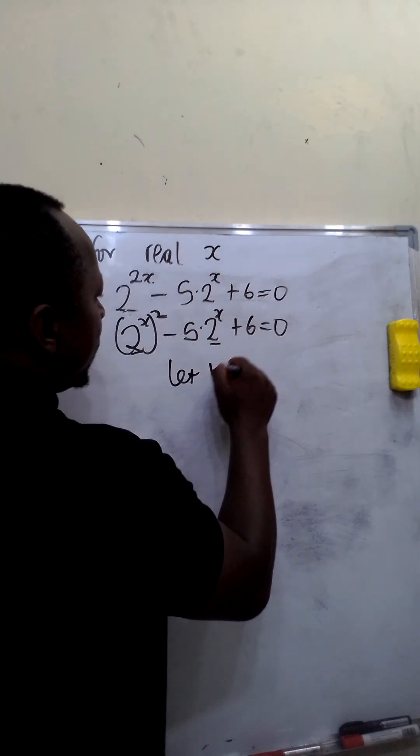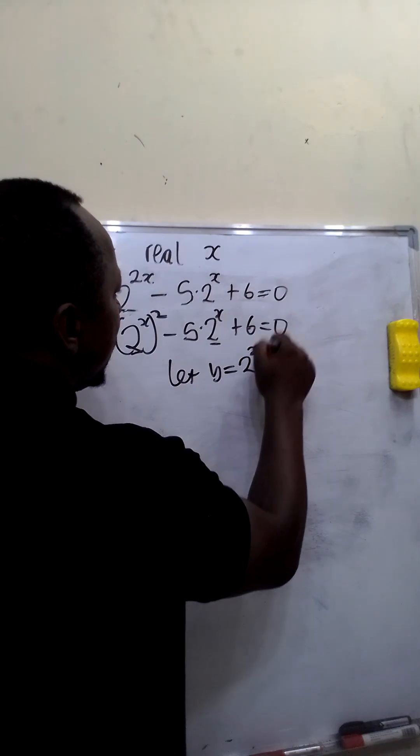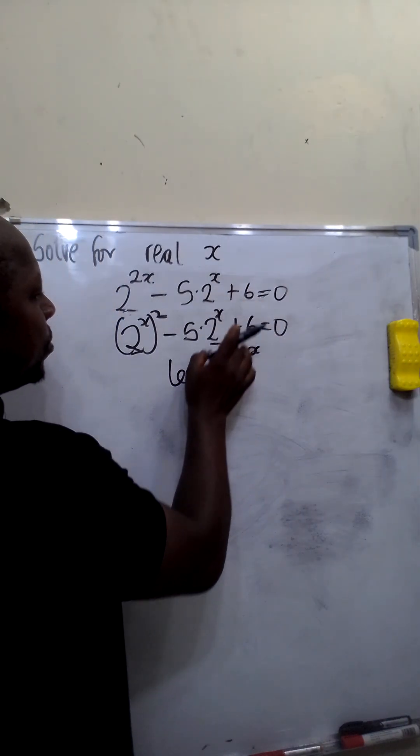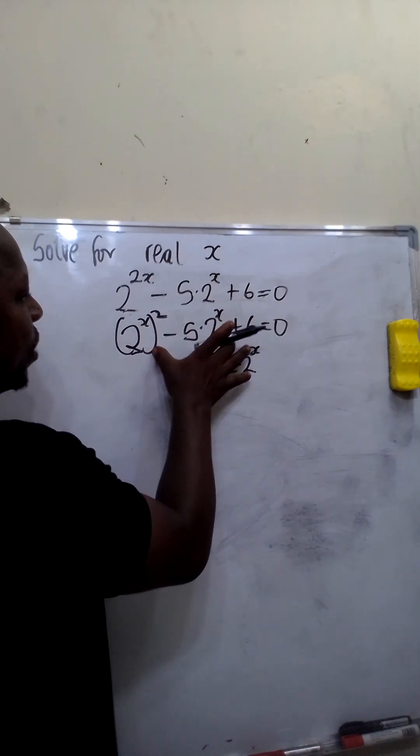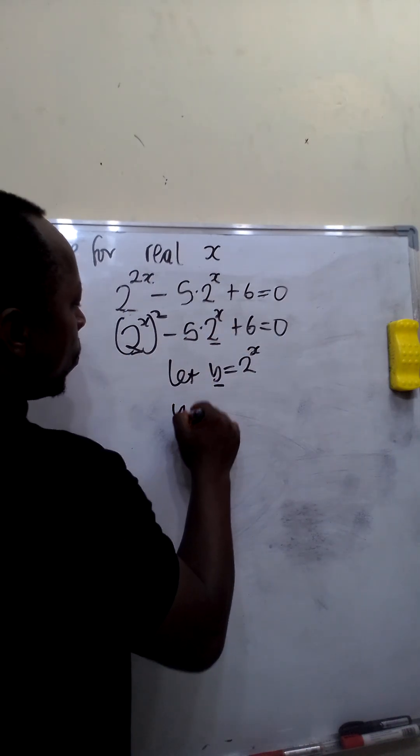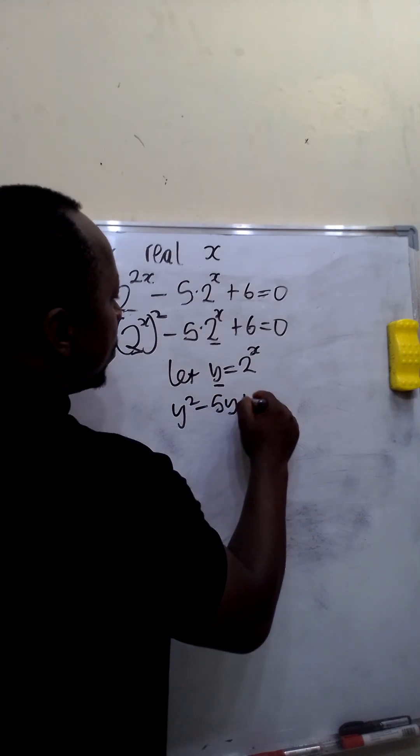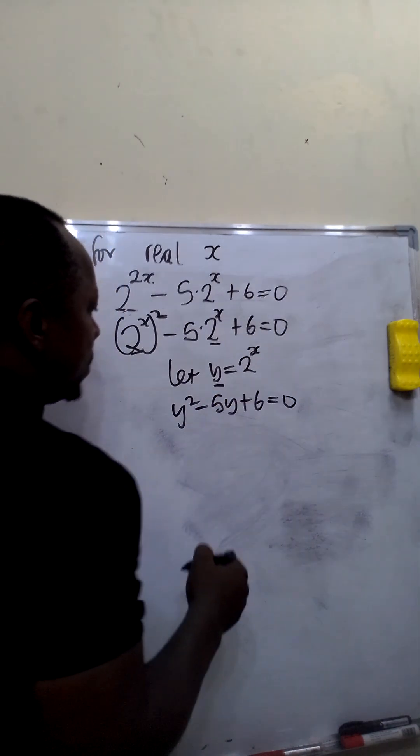Let y be equal to 2 raised to the power x. It implies anywhere we see 2 raised to the power x, we can replace it with y. So this equation will now become y squared minus 5y plus 6 equal to 0.